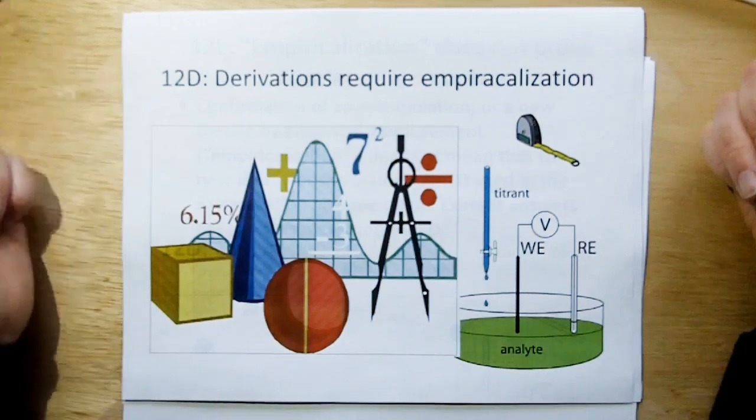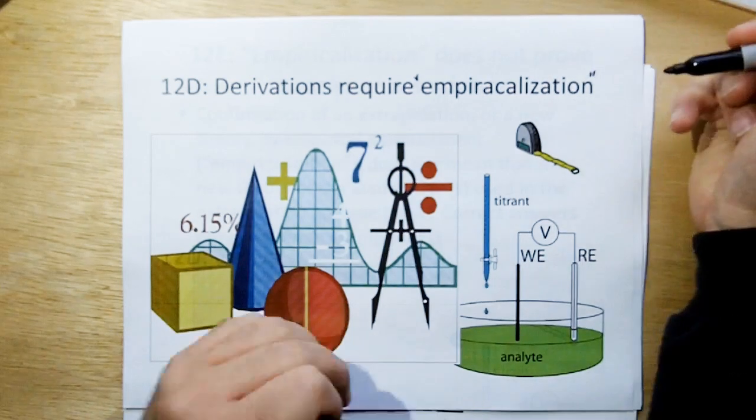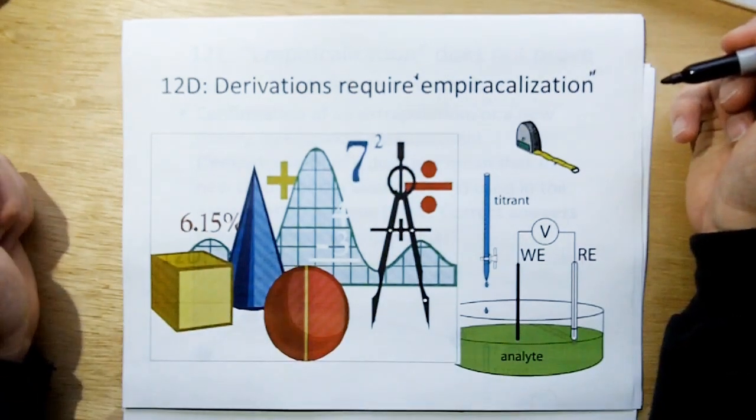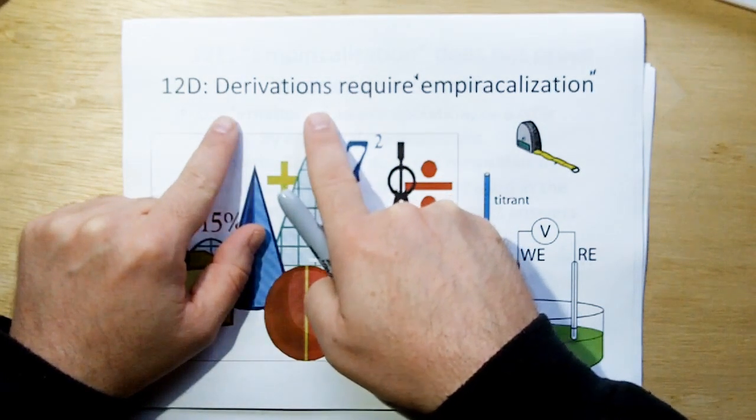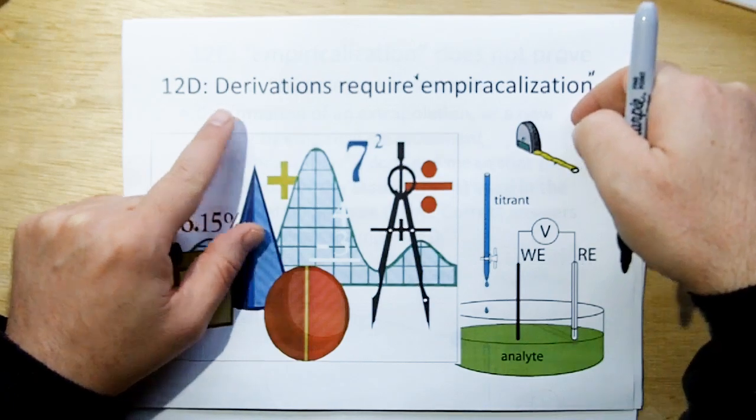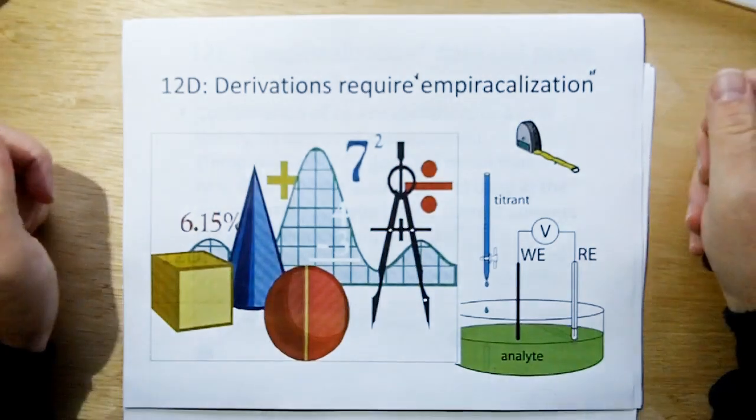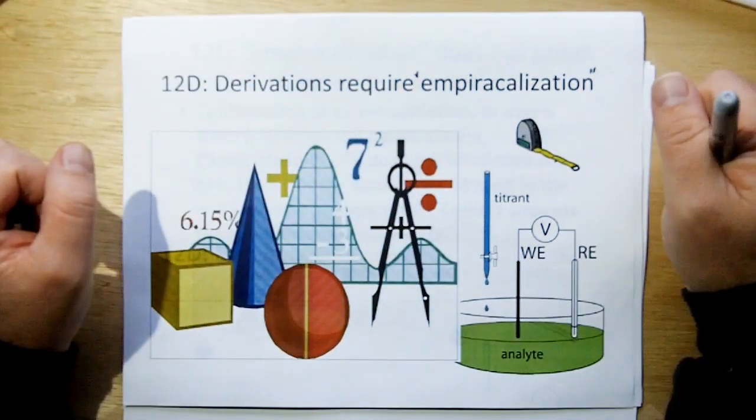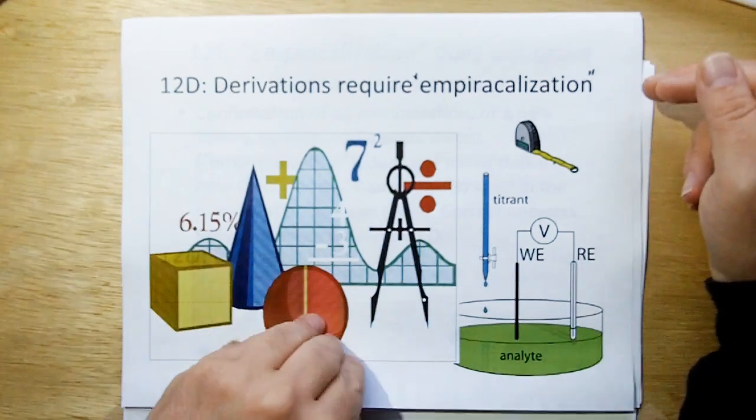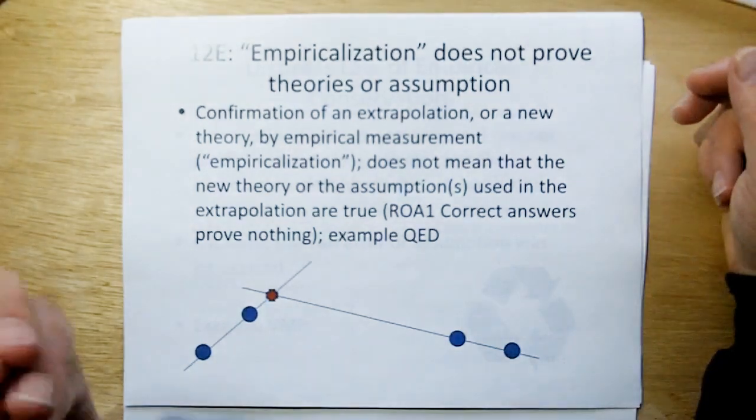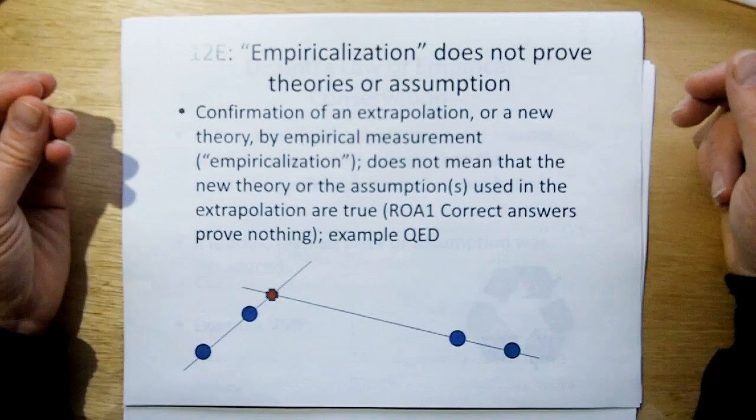And therefore, 12D, derivations require empiricalization. That's a word I came up with, which basically means you have to go and measure it and bring it back to an empirical model. So derivations cannot exist on their own, not in science. They eventually have to be empiricalized and be brought back down to being just an empirical model. And that's what we should only use for science going forward. That's the only thing engineers will use. We cannot use models about things we've never seen unless the results of those models have been verified. But just because you can verify something doesn't mean that the underlying theory or assumption is true.